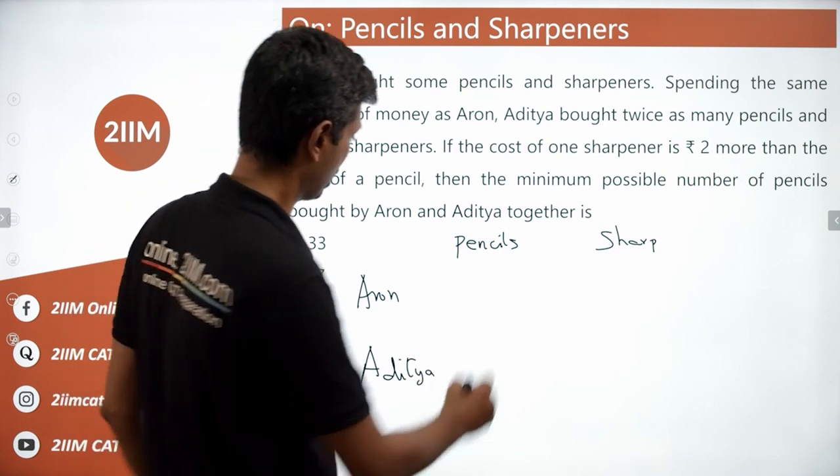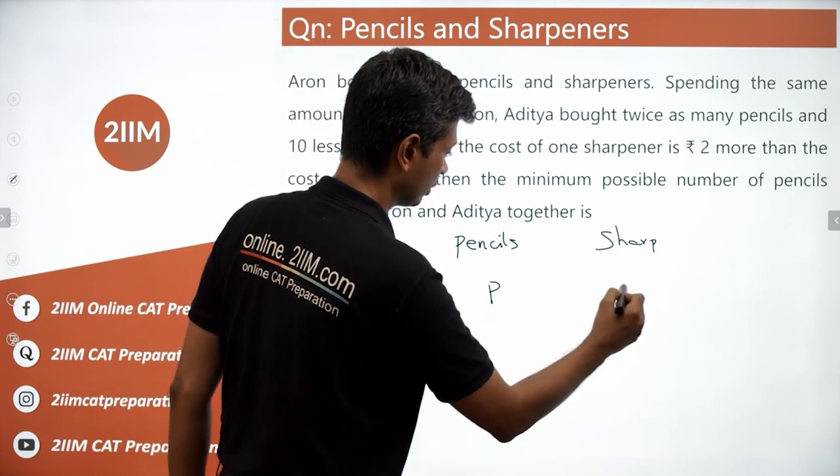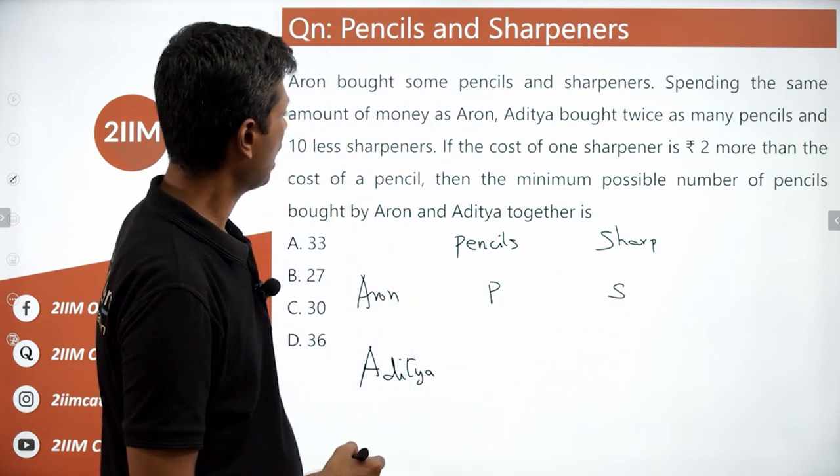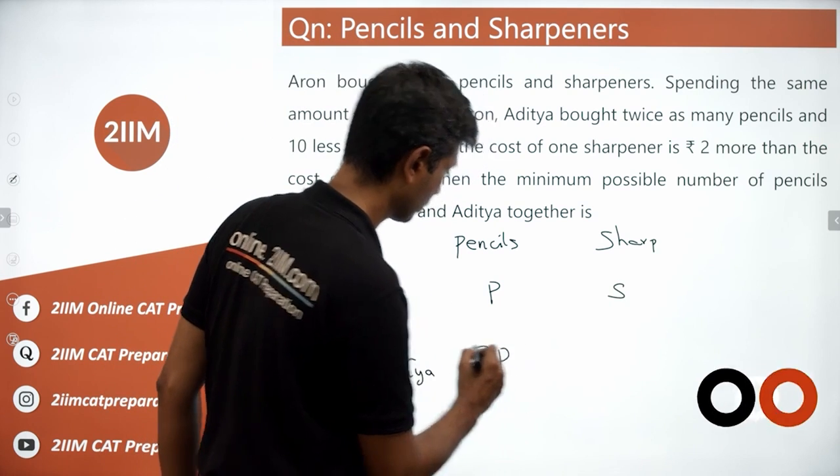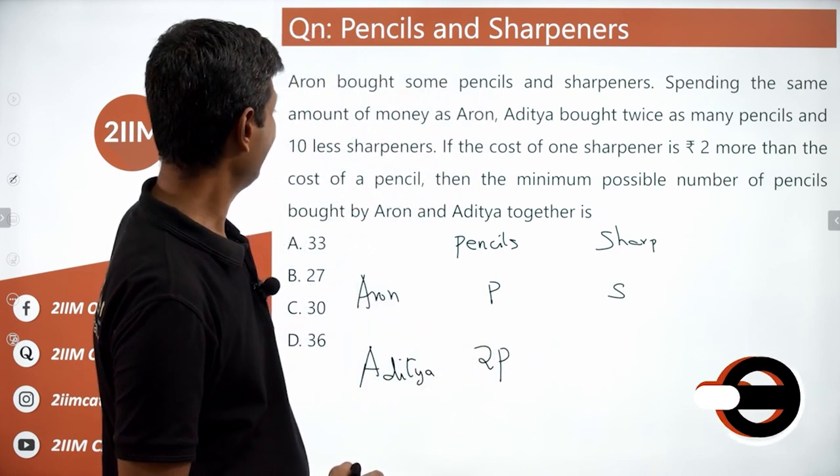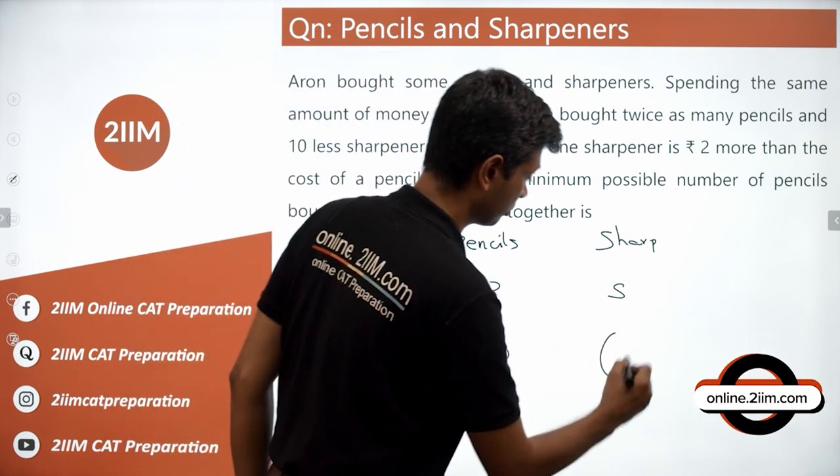Aaron bought pencils and sharpeners. Let's say he buys P pencils and S sharpeners. Aditya bought twice as many pencils, 2P, and 10 fewer sharpeners, S minus 10.